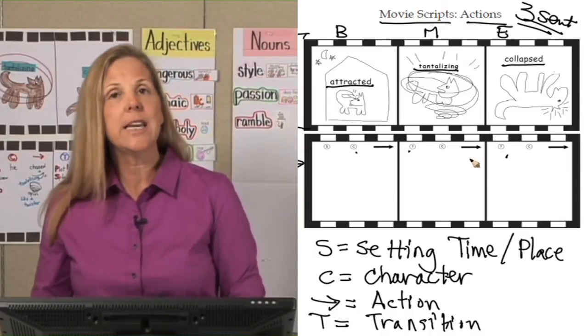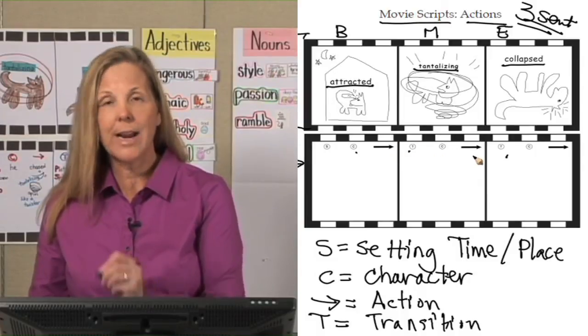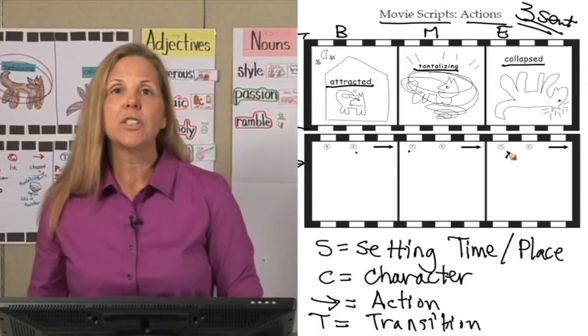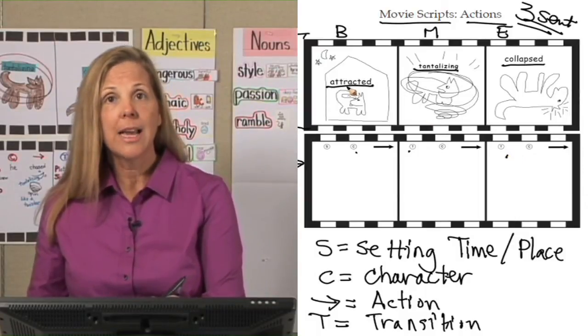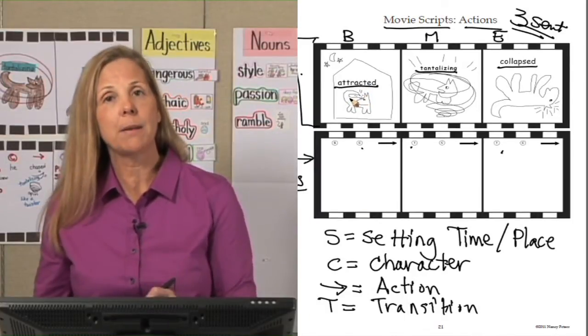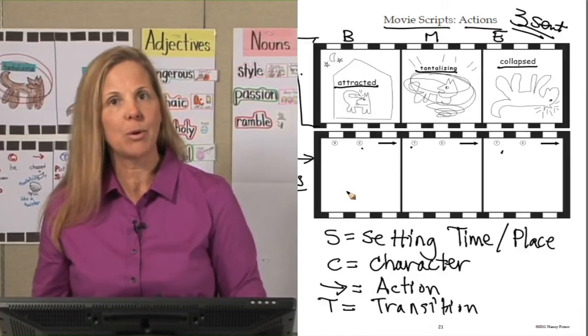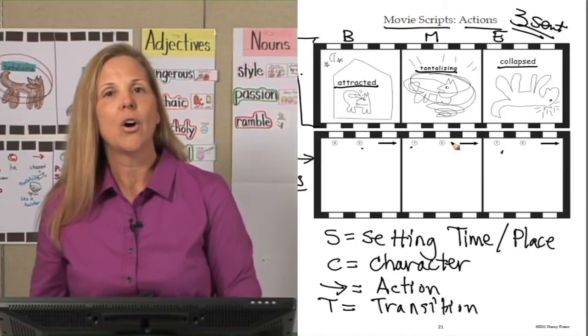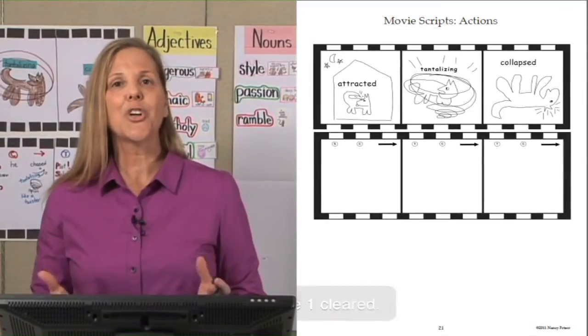These are our secret formulas. Setting character action for the beginning. Transition character action for the middle. Transition character action for the end. What students will be doing is they will be looking at the top box and they will take this picture and they will translate that picture into a sentence. That's why we have the secret formulas. S-C arrow, T-C arrow, T-C arrow are secret formulas to write these powerful sentences. Let's start our lesson.